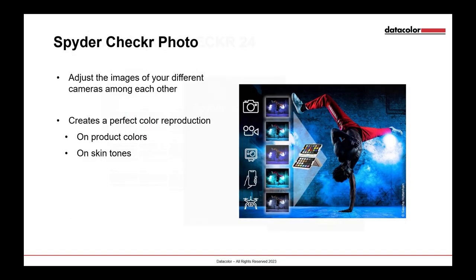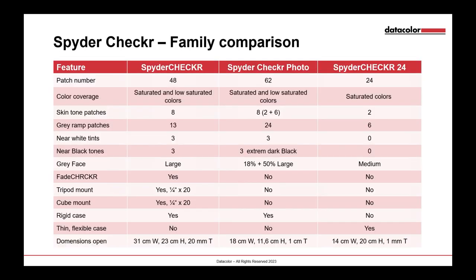This is what the SpiderChecker Photo can do: adjusting colors from different camera sources to match each other. For those who have been in the business longer — I was born in '66, so I've been around — we remember analog film with slightly different color characteristics. It's the same with camera-lens combinations. The SpiderChecker 24 is the starting product; it's the right side of the large SpiderChecker.